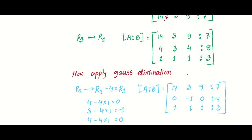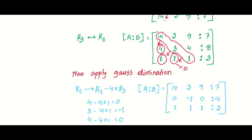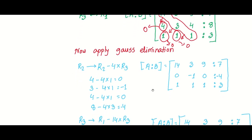Now we apply elimination to make the matrix into an upper triangular matrix. The goal is to make all values below the diagonal equal to zero, so that the lower triangular portion has zeros. Let's see the first row operations.